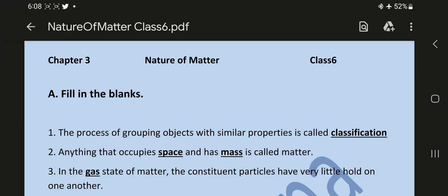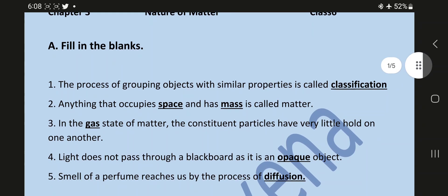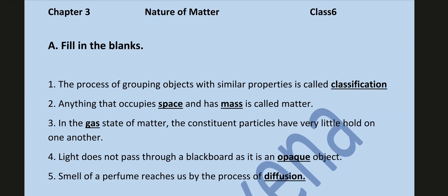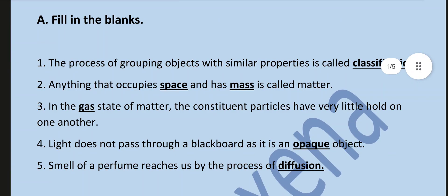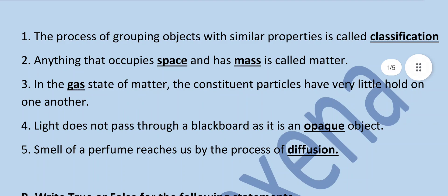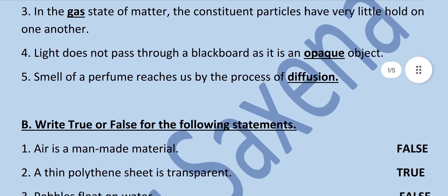Matter Chapter 3 full solution. Fill in the blanks: The process of grouping objects with similar properties is called classification. Anything that occupies space and has mass is called matter. In the gaseous state of matter, the constituent particles have very little hold on one another. Light does not pass through a blackboard as it is an opaque object. Smell of perfume reaches us by the process of diffusion. This is true.